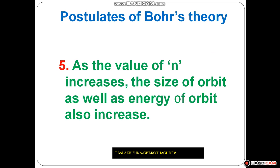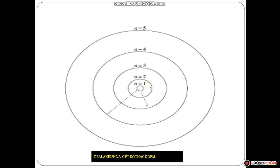As the n value increases, the size of the orbit as well as the energy also increases. The second orbit energy is higher than the first orbit, and the third orbit energy is higher than the second orbit. We can easily understand this by observing the diagram. This is a very important point: as n increases, both the size and energy of the orbit increase.